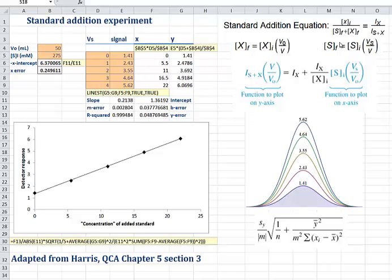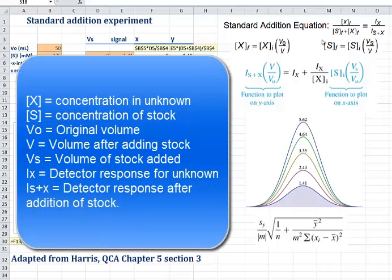These two equations in the second row describe how we calculate the actual concentration of the solution after adding a volume of the standard. Let's go through some definitions. [X] is the concentration in our unknown sample. [S] is the concentration of our stock solution. F and I stand for final and initial. V0 is the initial volume of our unknown, V is the current volume, and Vs is the volume of the stock solution that we've added.